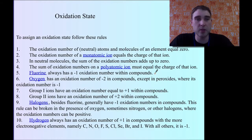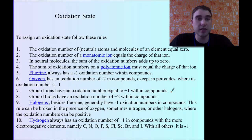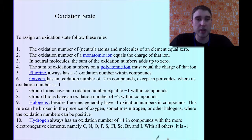Fluorine is always minus 1. Oxygen is always minus 2, except in peroxides. Group 1 ions are always plus 1. Group 2 ions are always plus 2. Halogens are always minus 1. And hydrogen is always plus 1, unless it's bonded with electronegative elements.